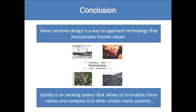In conclusion, value-sensitive design is a way to approach technology that incorporates human values. This can be applied when creating a new system, as well as when analyzing an existing system. The four main elements include stakeholders, values, pervasiveness, and time. And finally, Spotify is an exciting, relatively new system that allows us to analyze these components and compare it to other similar music systems.